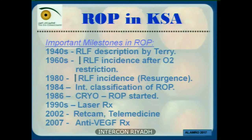For classification, briefly: zone one is the most posterior and represents the worst disease; then zone two and zone three. We also classify by the extent in clock hours of disease, and severity by stages. Stage one is a line between vascular and avascular retina in the periphery. Stage two is when that line becomes a ridge.